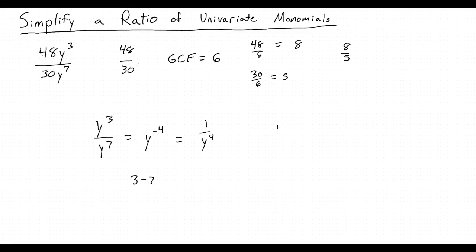Putting these two solutions together, our final solution becomes 8 fifth times 1 over y to the fourth, or 8 over 5y to the fourth.